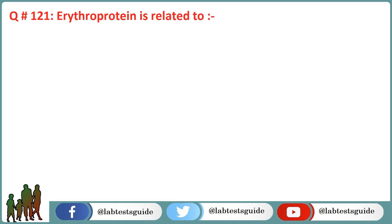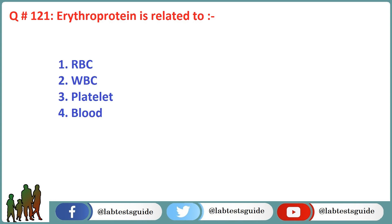Let's start. Question number 121: Erythropoietin is related to? Option 1: RBC. Option 2: WBC. Option 3: Platelets. Option 4: Blood. The correct answer is Option 1: RBC.